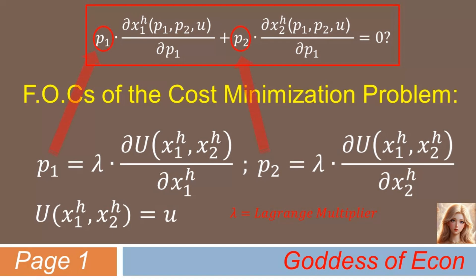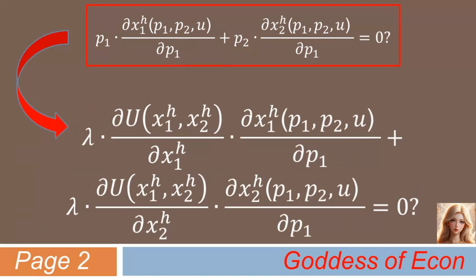Now, let's plug the expressions on the right-hand side of the first two FOCs into P1 and P2 on the top of the slide. Then we have λ times ∂u/∂x_1^h times ∂x_1^h/∂P1, plus λ times ∂u/∂x_2^h times ∂x_2^h/∂P1.